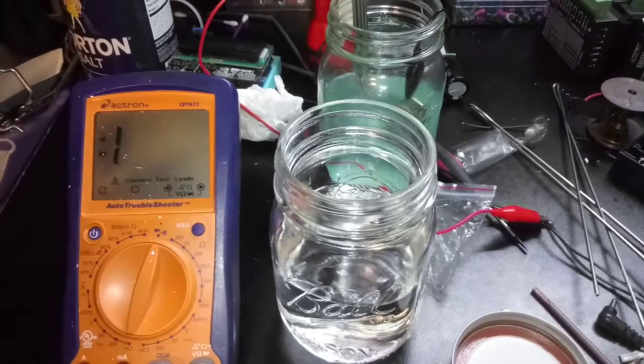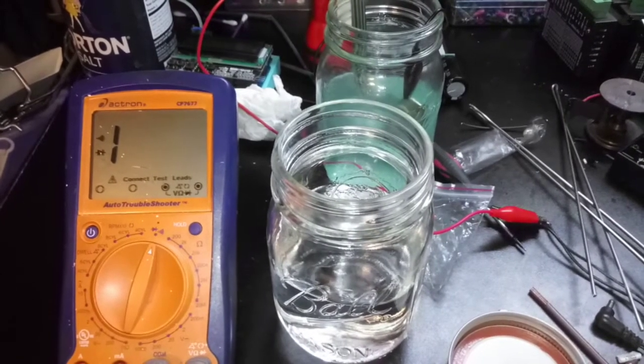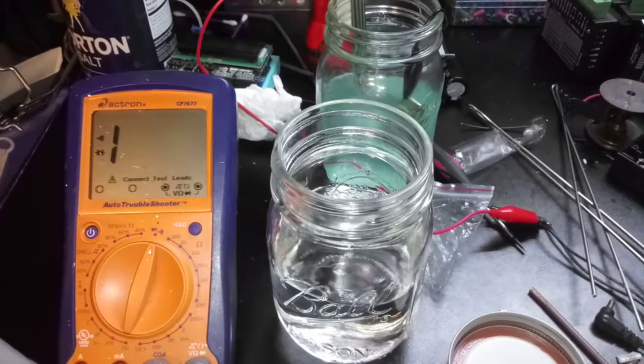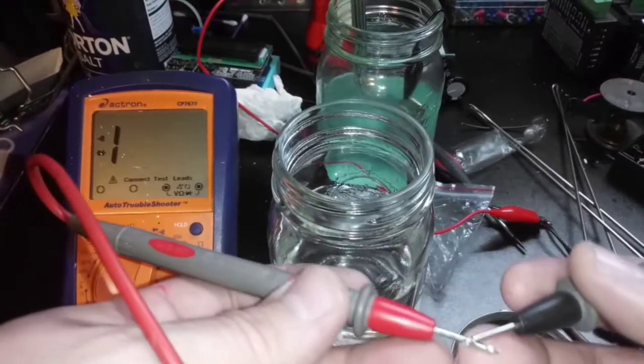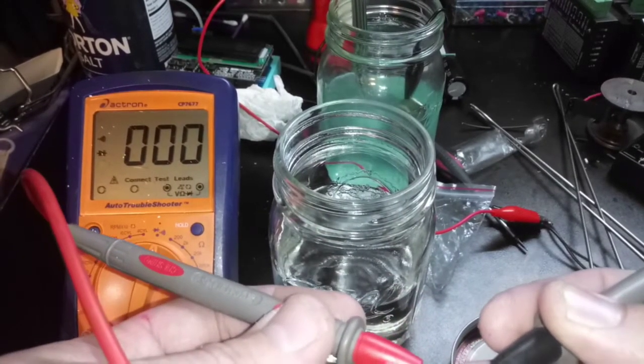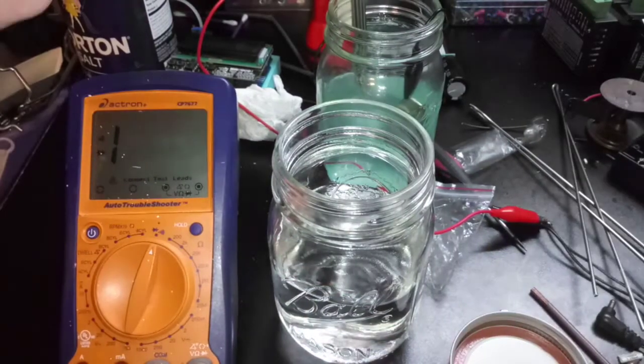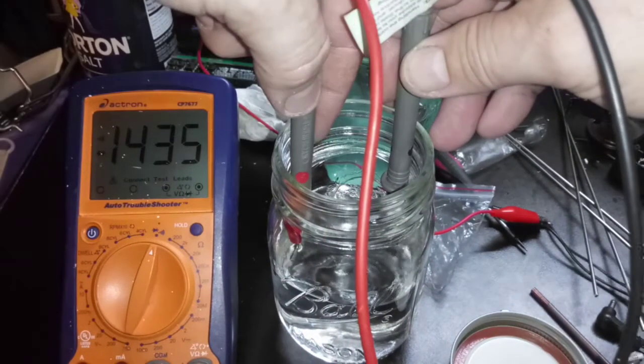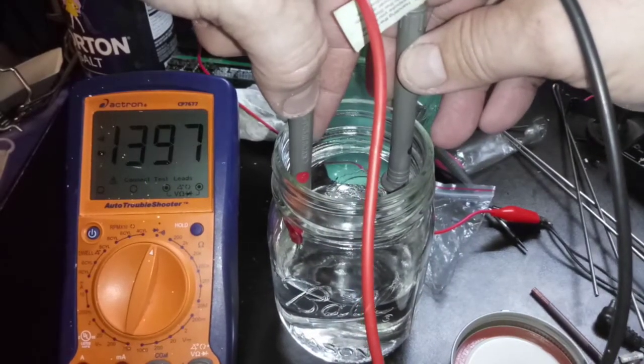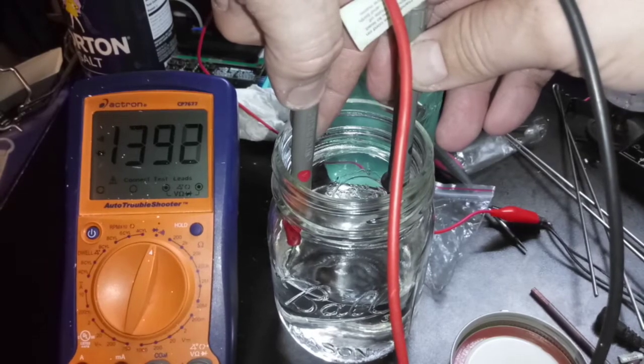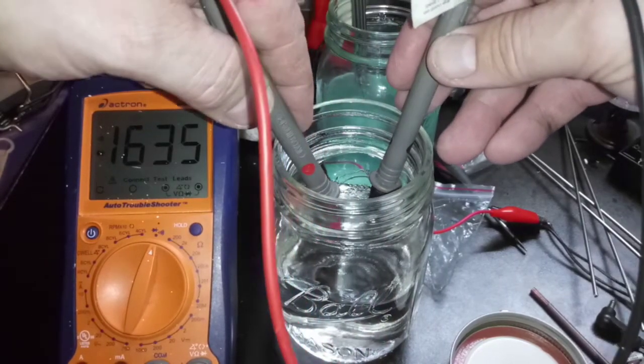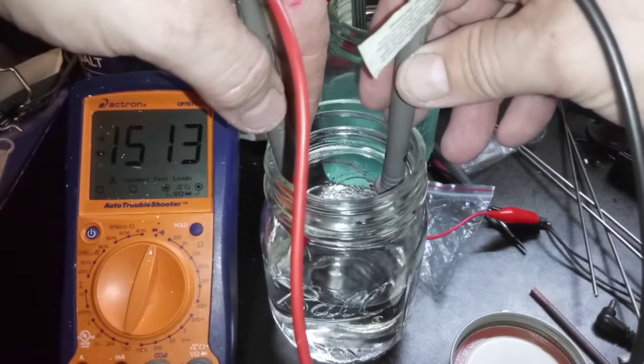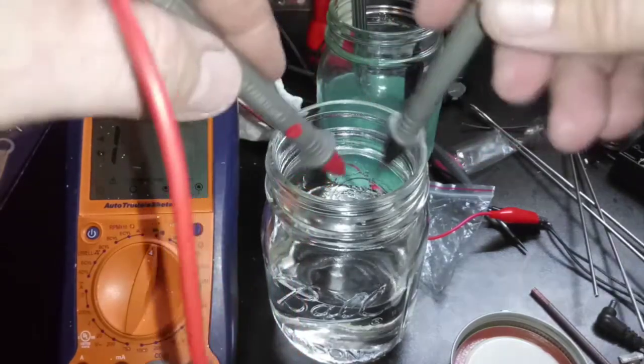Alright, bear with me here. I set the multimeter to basically show you the conductivity. If you touch the leaves together, you get infinity, which is all zeros. If you stick it in the pure vinegar, you've got about 1,400. And, if you bring them closer together, farther apart, it stays around 1,400 mark.